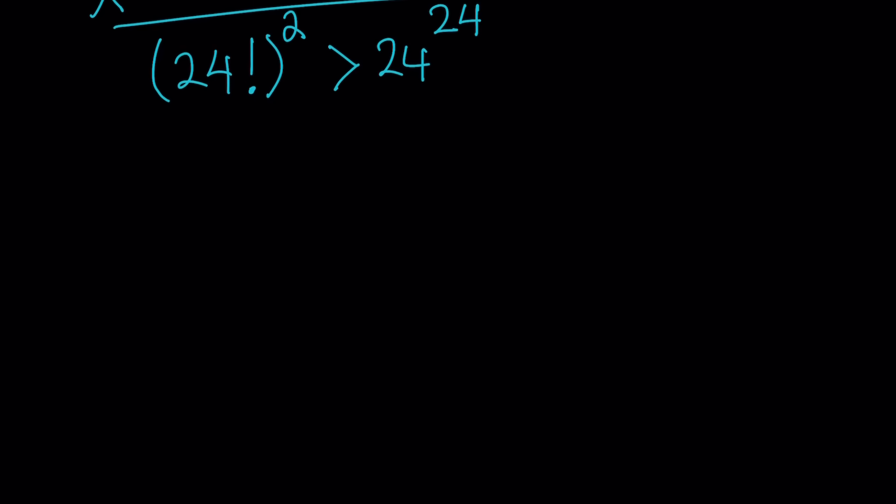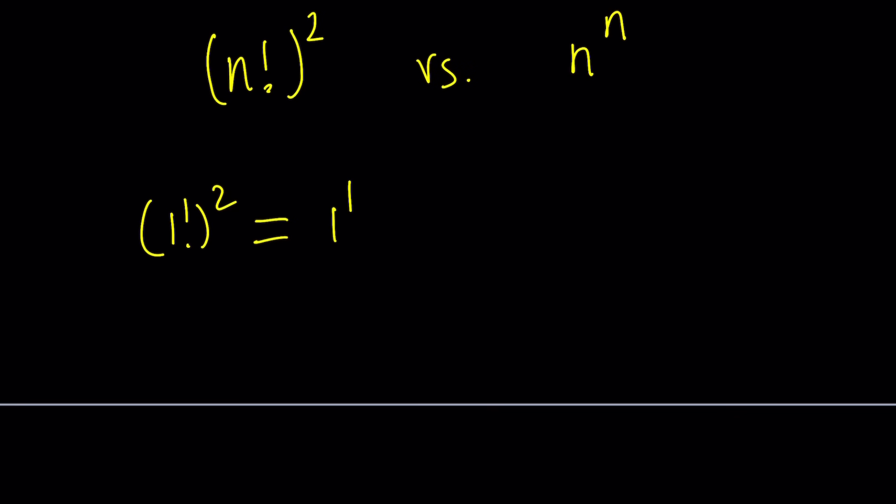Now, we can write this in general form. In general form, this is going to look like the following: n factorial squared versus n to the power of n. And by comparison, we found that n factorial squared is larger. But is it always true for all values? For example, if I take 1 factorial and square it, and then compare it to 1 to the power of 1, obviously, these two things are going to be equal. Or if I have 2 factorial squared, which is 2 to the second, and compare it to 2 to the 2, again, they're going to be equal, which is kind of interesting.